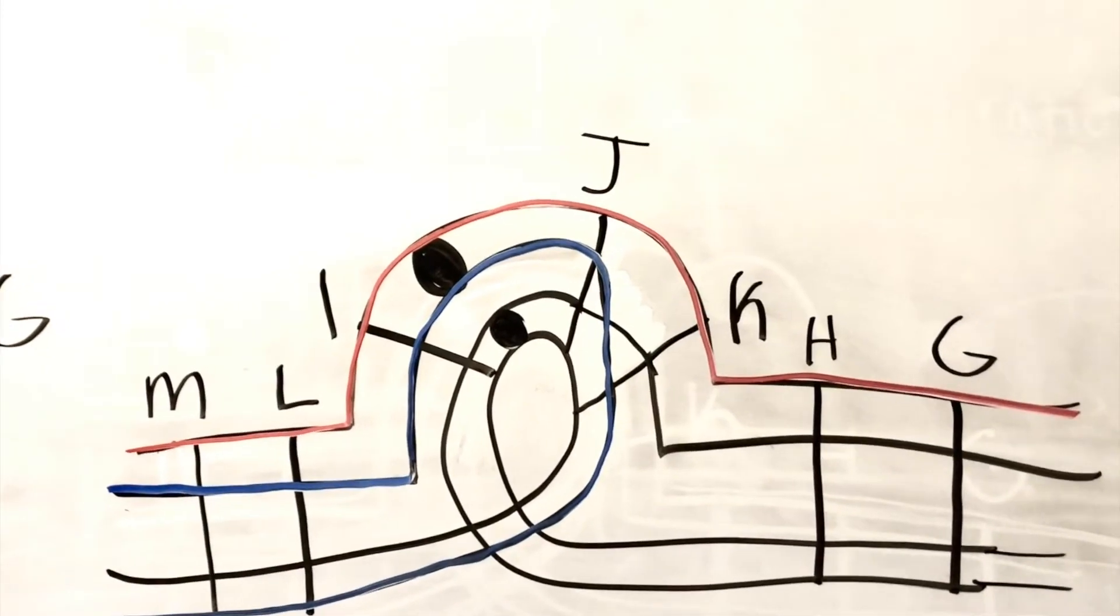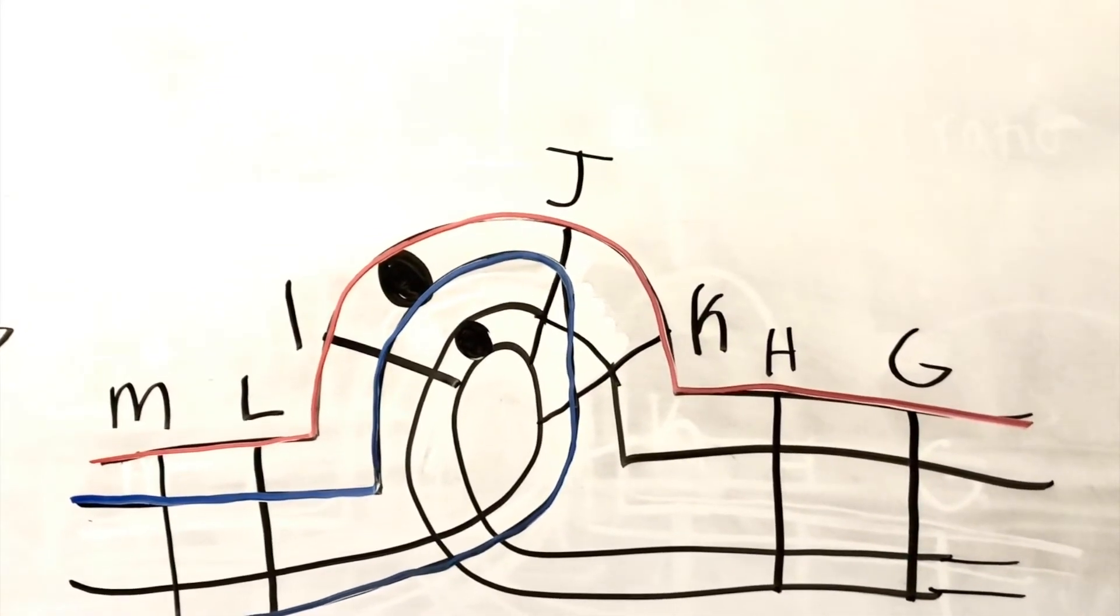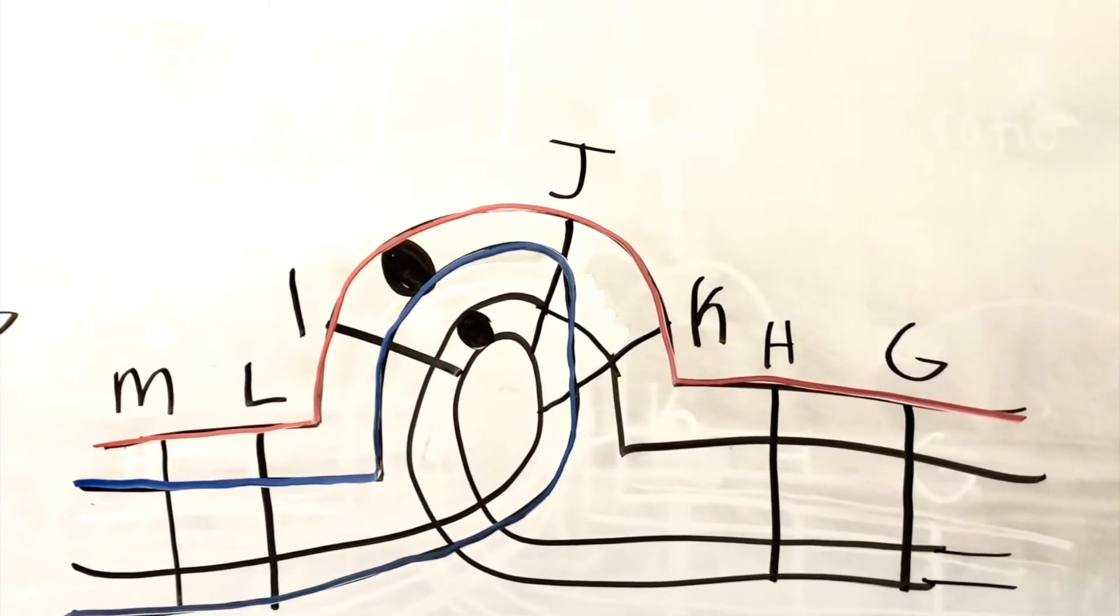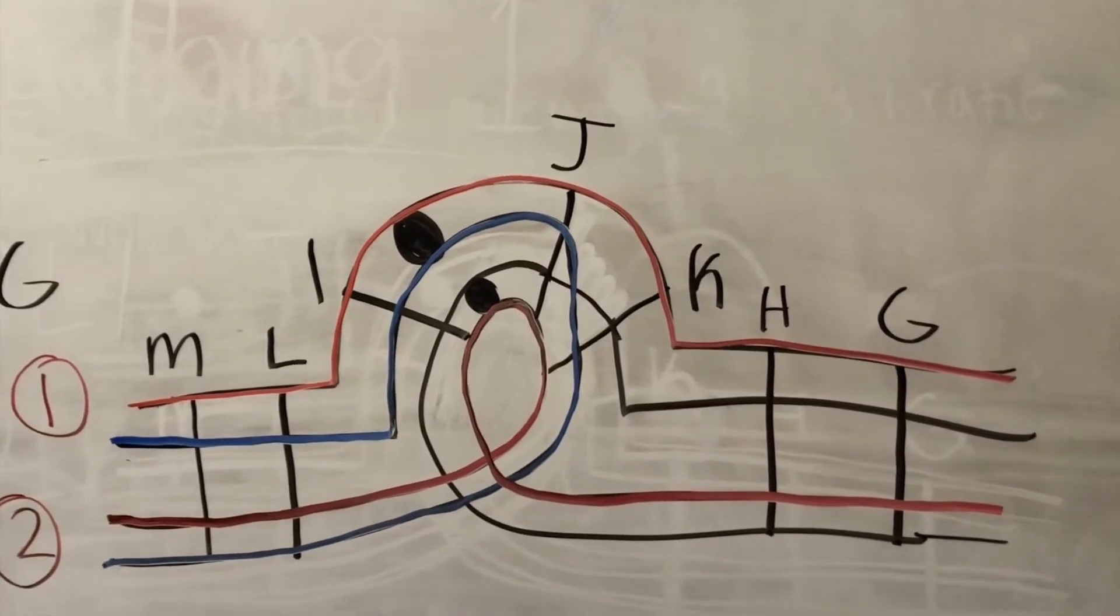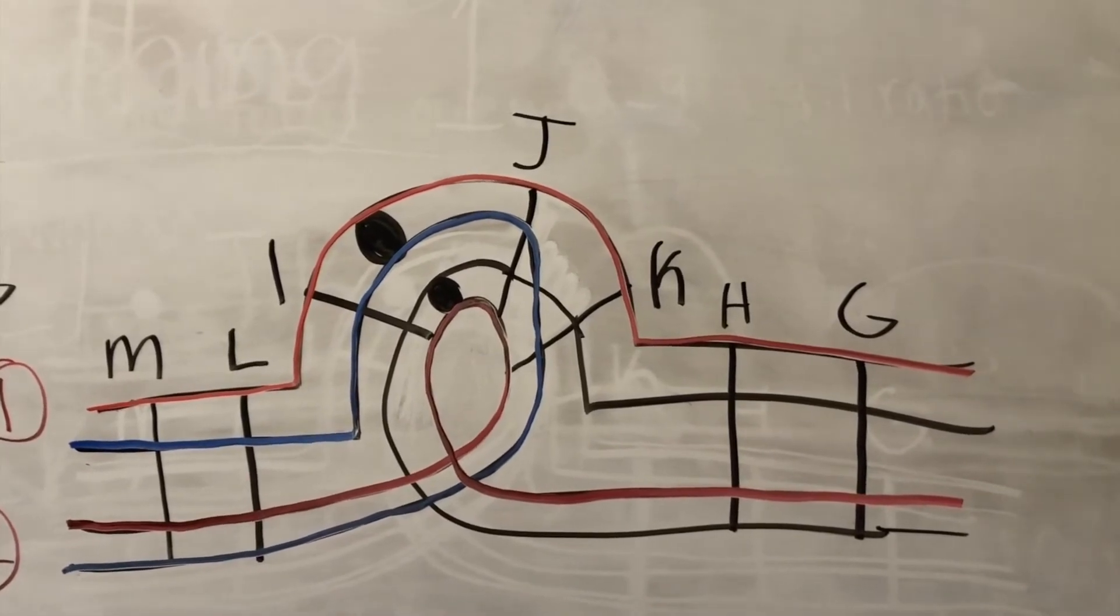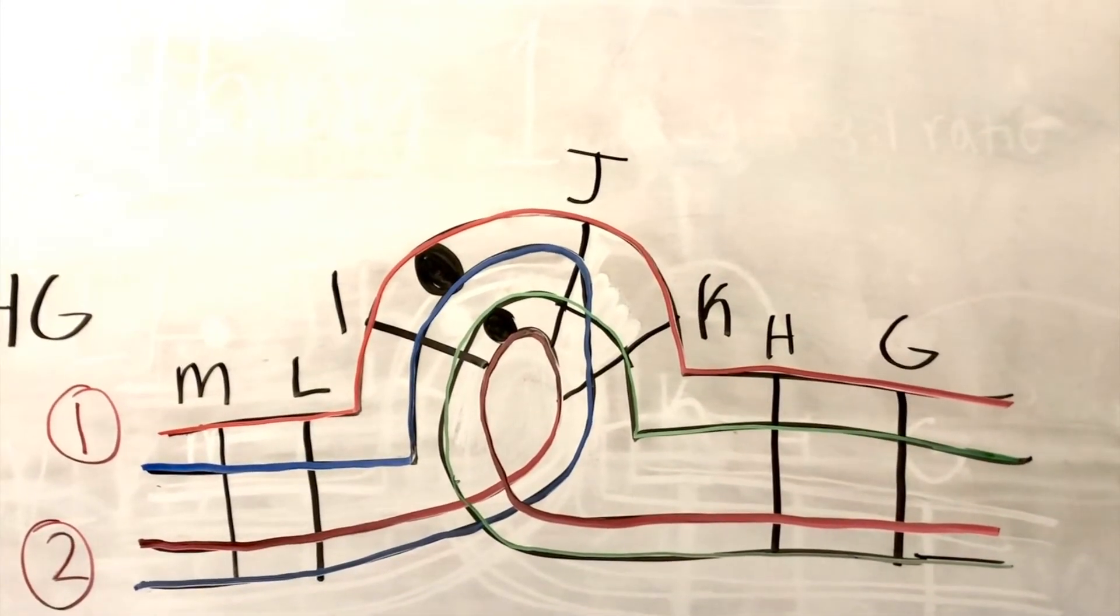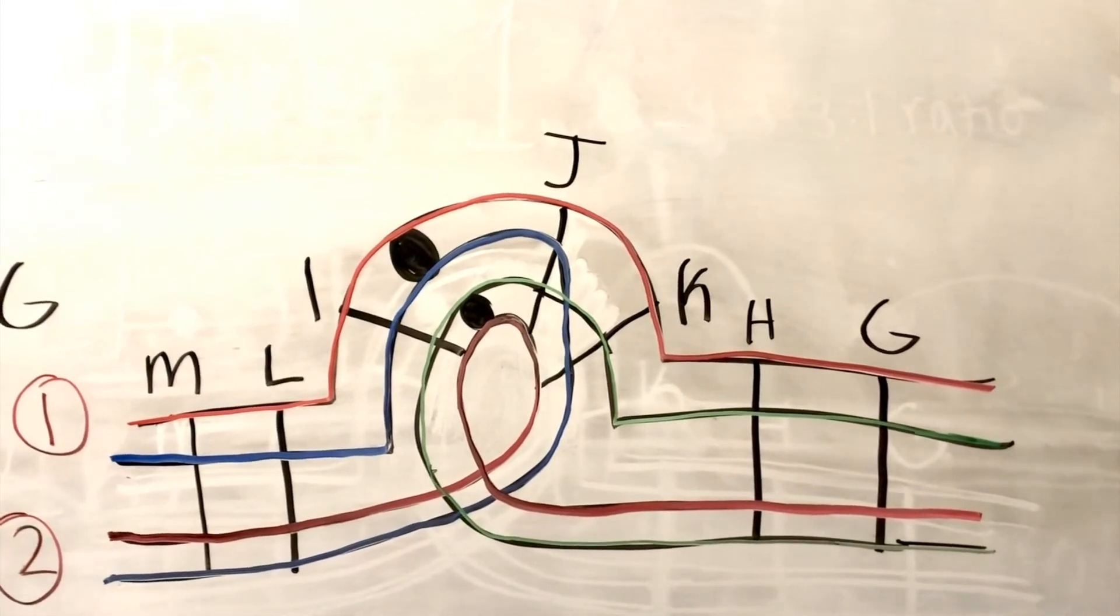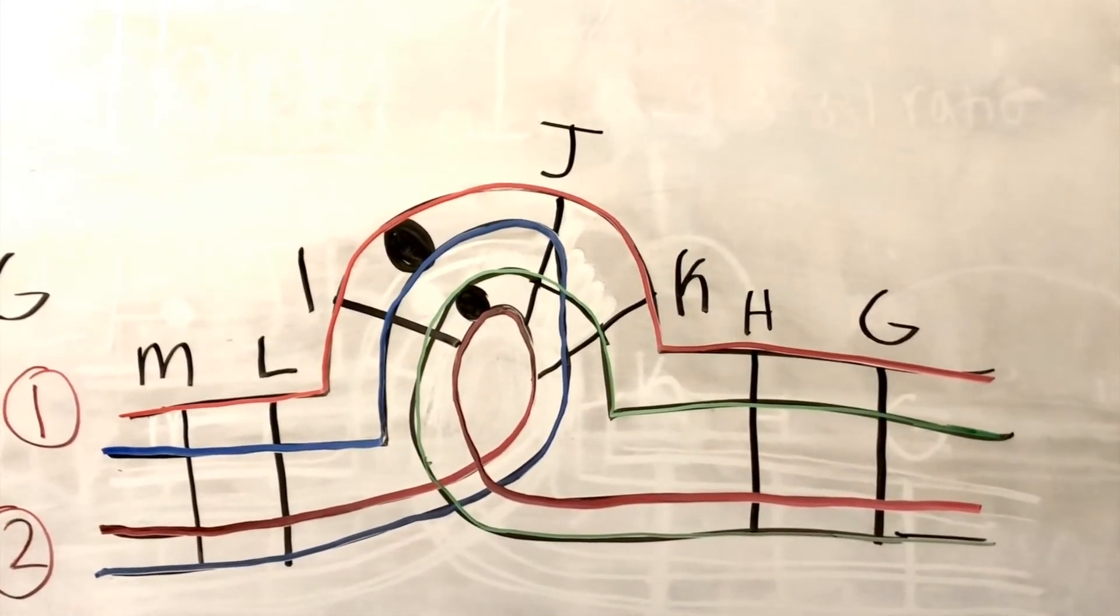Then if we move to the bottom chromatid of chromosome 1, I will pick up M-L-I centromere J-K-L-M that I have highlighted in blue. Then if we move to chromatid of chromosome 2 and look at the first chromatid I have highlighted in red, we will pick up M-L-K-J centromere J-I-H-G. Then if we move to the bottom chromatid I have highlighted in green, we will pick up G-H-K-J-centromere I-H-G.